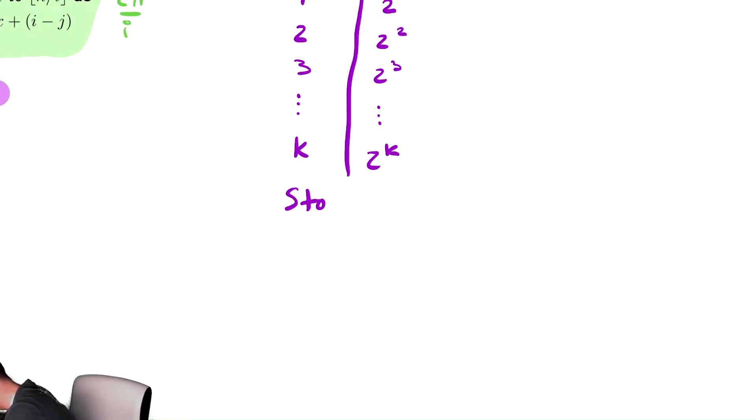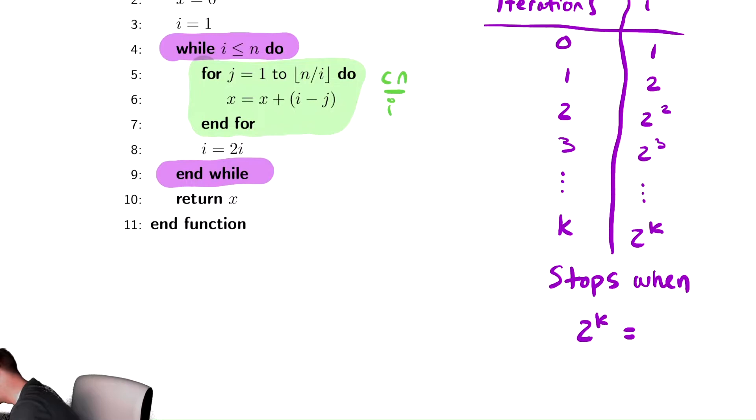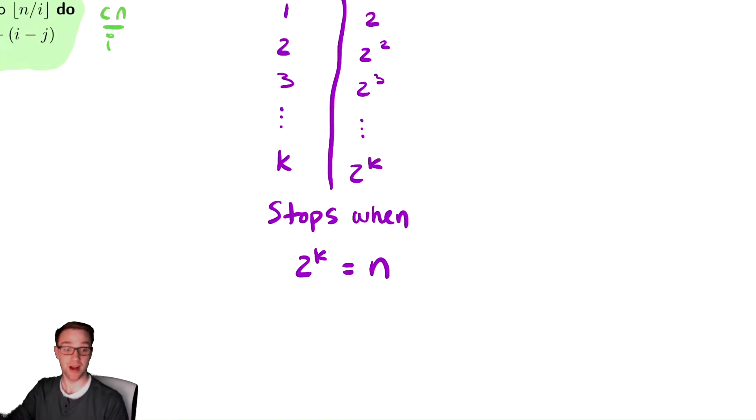Well this stops when two to the k is equal to the stopping condition of the while loop, in this case that's n. And again that's just an approximation of when does it stop. And again we are going to add some sort of symbolic decorator to that k to signify that it's a very special value of k. I'm going to call it k prime. We solve that for k prime and get k prime is equal to log base two of n.